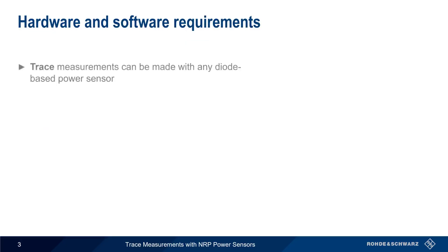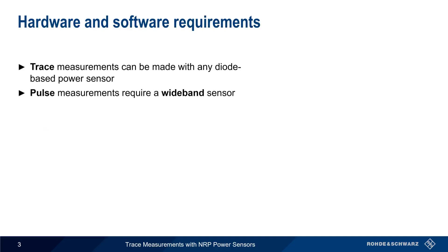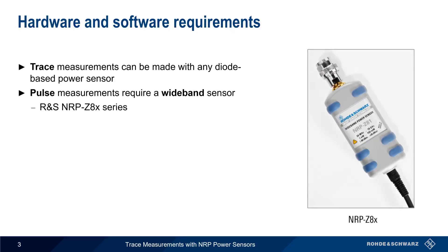Basic trace measurements can be made with any diode-based power sensor, but pulse measurements require the use of a so-called wideband power sensor, such as the NRP Z8X series sensors. We'll explain the difference between trace and pulse measurements shortly.